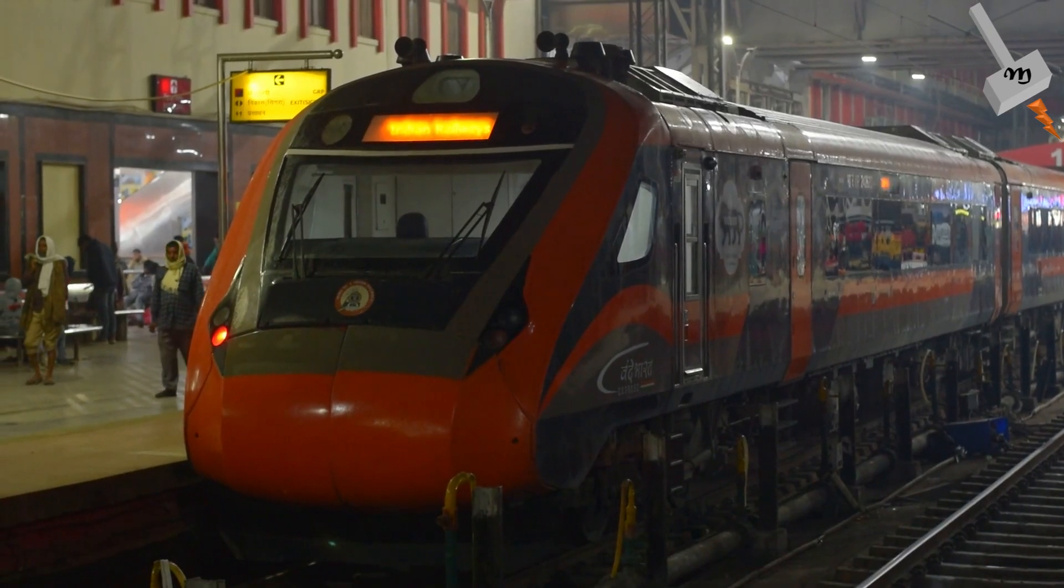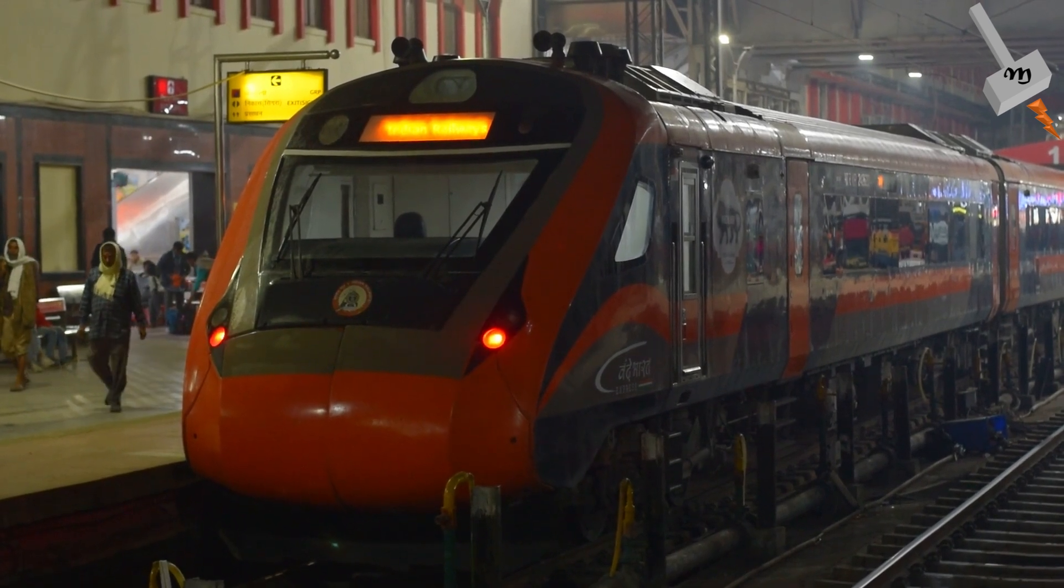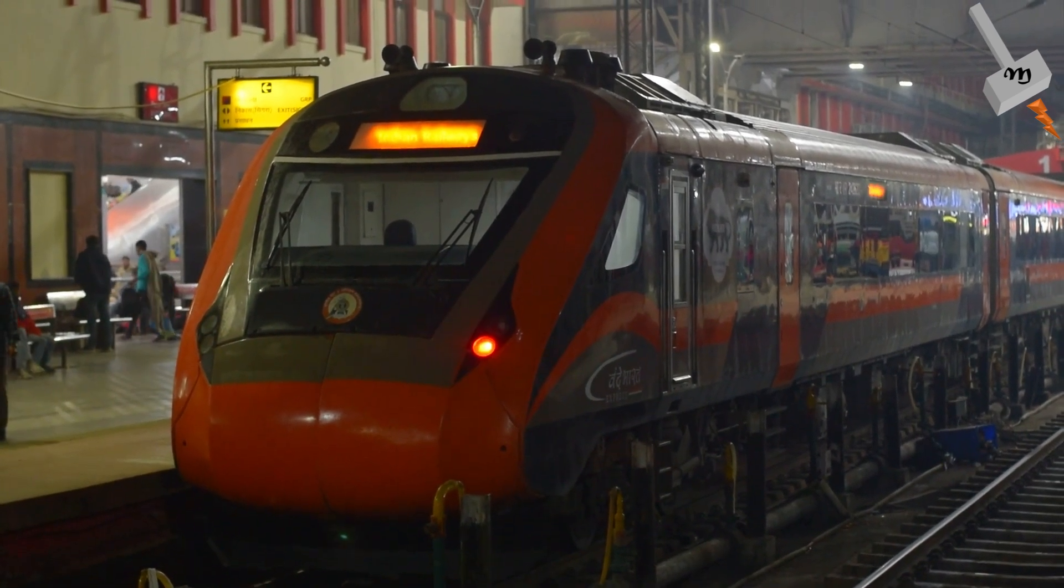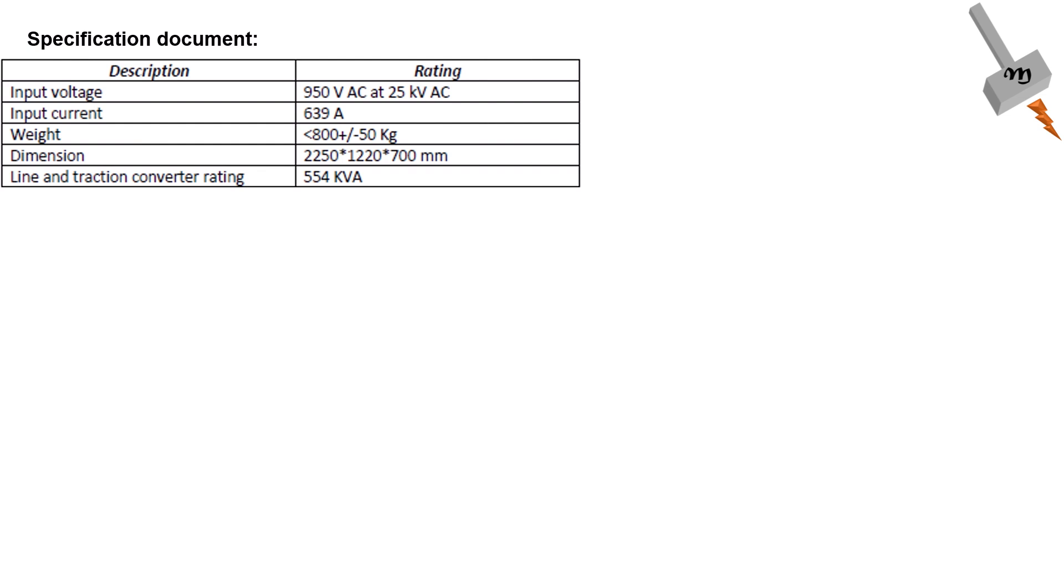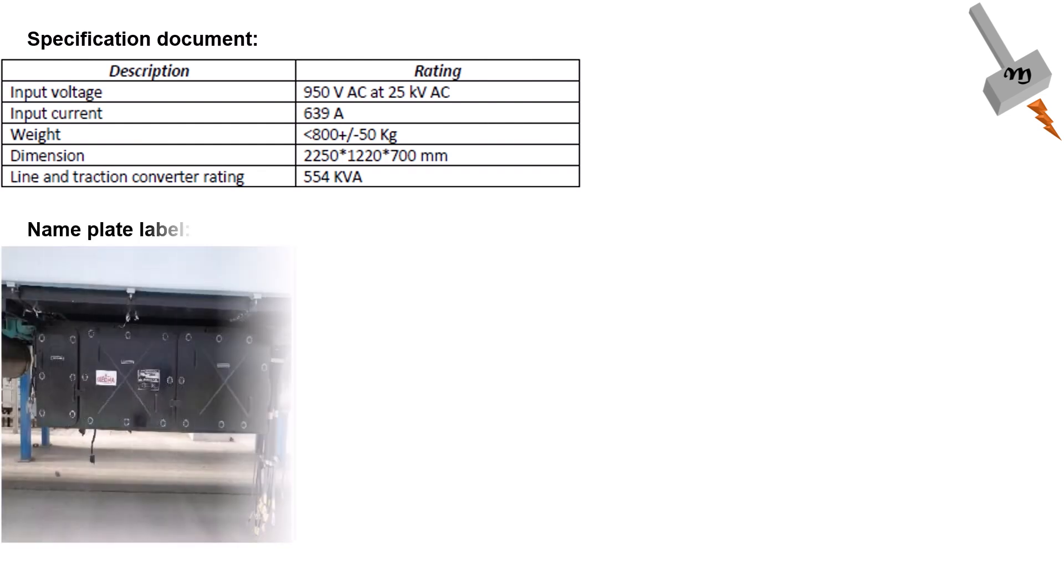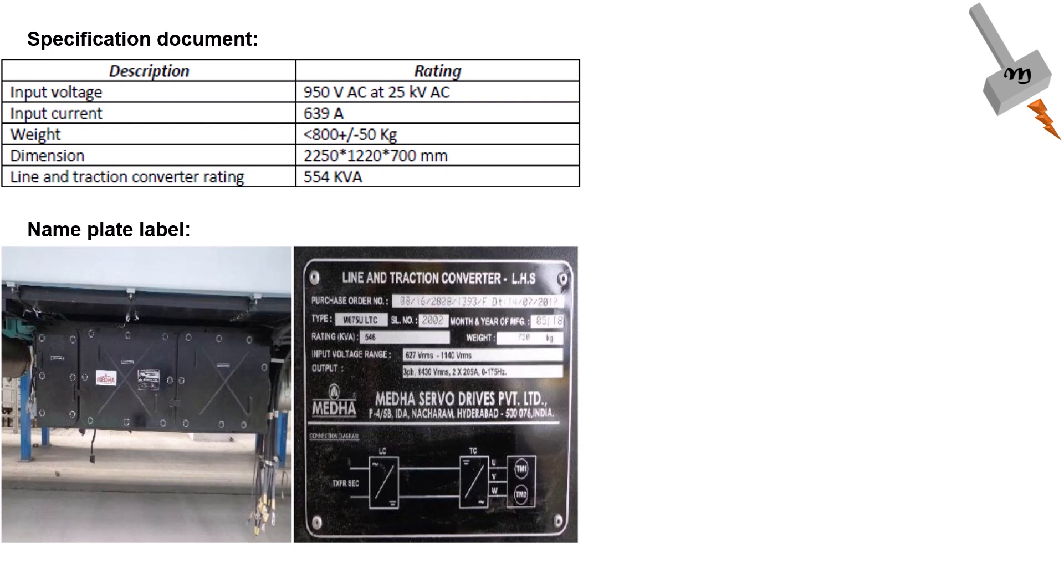Now let's investigate the high-level specifications of the traction converter used in Vande Bharat. We found these details from two sources, one being the specification from the OEM and the second being the nameplate rating. The specification is single-phase input voltage of 950 volts, input current of 639 amps, and kVA of 554, whereas the nameplate kVA rating is 546. The nameplate input voltage ranges from single-phase 627 volts to 1140 volts, and output is 3-phase voltage, 1430 volts, and 205 amps, with frequency ranging from 0 to 175 hertz.